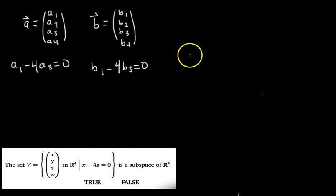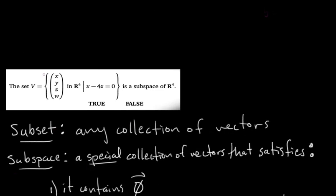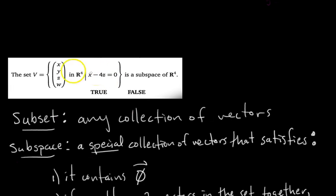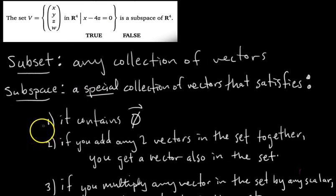Now we want to see if we add them together, is the sum still in set V? But first, let's quickly check the first condition — does set V contain the zero vector? If all components are zero, does it satisfy the condition? Zero minus 4 times zero equals zero — yes. So the zero vector is in set V, and the first condition is met.